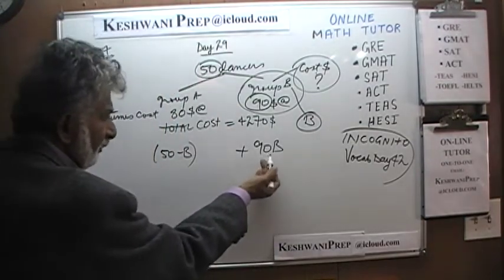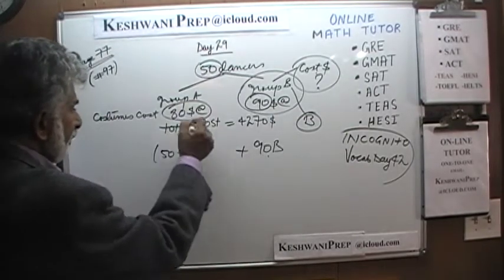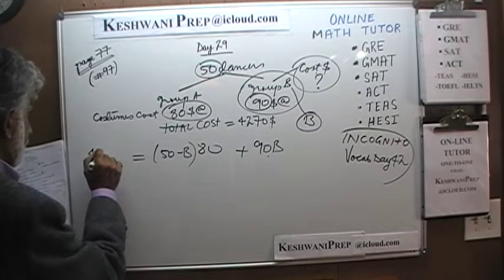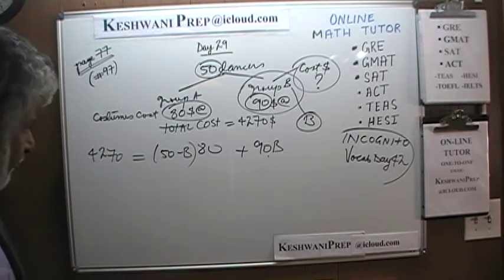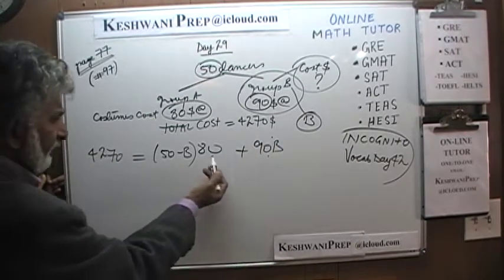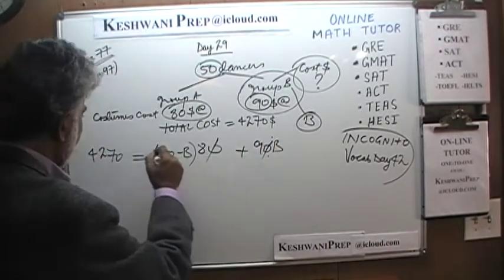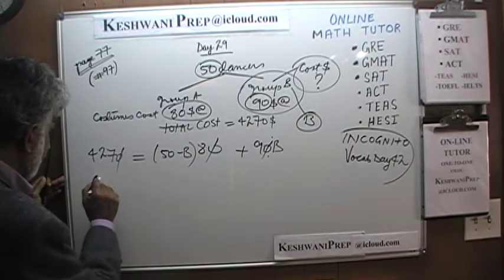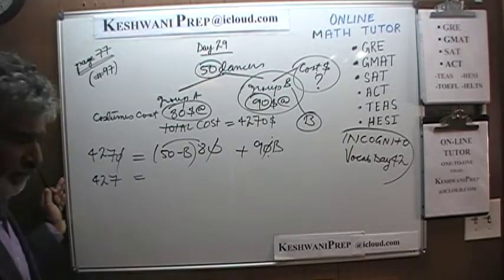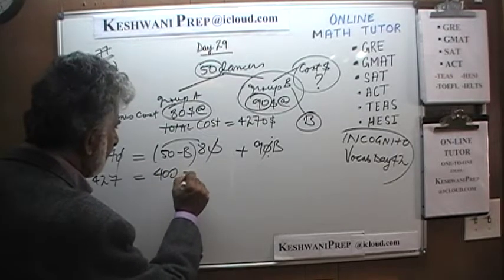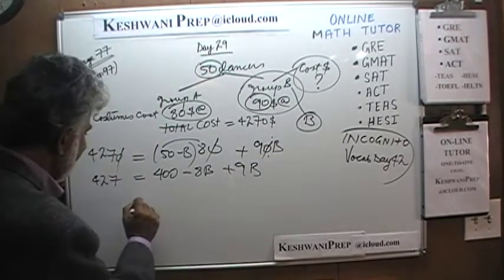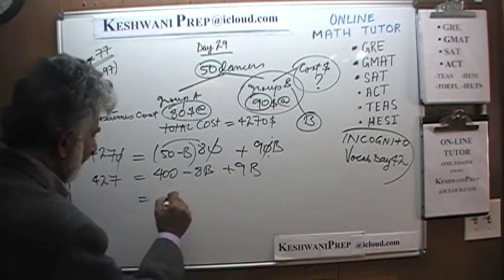So: 90B plus 80 times (50 minus B) equals 4,270. The very first thing we should do here is note that these are multiples of 10, so let's divide the entire equation by 10. Now we have 427 equals 8 times (50 minus B) plus 9B, which gives us 400 minus 8B plus 9B.